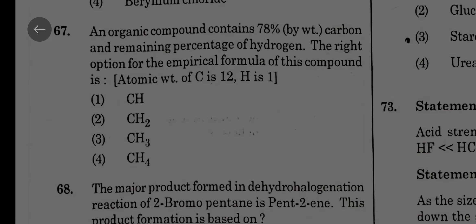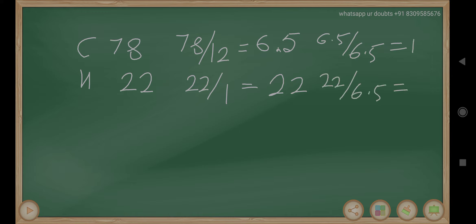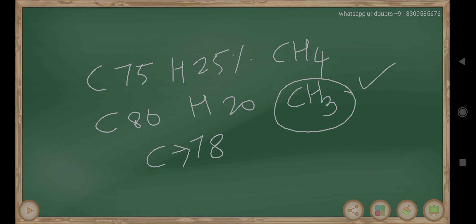An organic compound contains 78 percent by weight of carbon and remaining percentage hydrogen. The right option for the empirical formula: carbon 78 percent means hydrogen 22 percent. Number of moles calculation: 78 by 12 equals 6.5, and 22 by 1 equals 22. Getting the least number, 6.5 by 6.5 equals 1 and 22 by 6.5 is approximately 3, so CH3. But here the problem is, carbon if it is 75 percent, hydrogen 25 percent, the answer will come CH4. Carbon 80 percentage, hydrogen 20 percentage, the answer will come CH3. Here it is given carbon 78 percentage, but of course CH3 is the correct answer according to my knowledge.